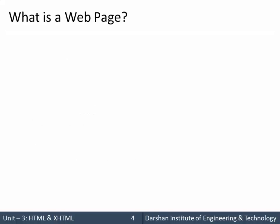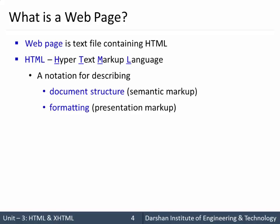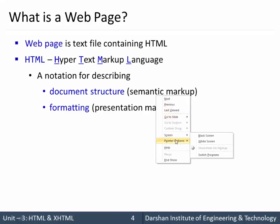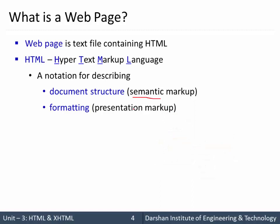Let's start with what is a web page. A web page is a text file containing HTML. So the obvious question would be what is HTML. HTML is hypertext markup language — a notation for describing the structure as well as format of a web page. In HTML there can be semantic as well as presentation markups. Tags used to structure the document are called semantic markups, and tags used to format the content are called presentation markups.